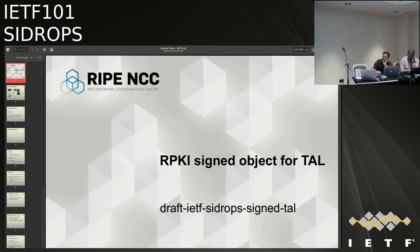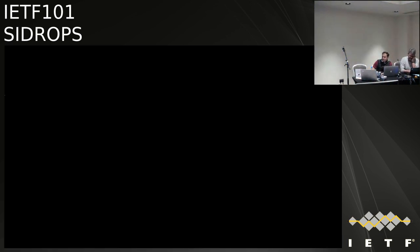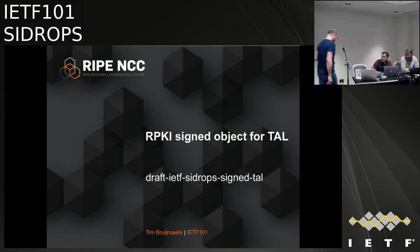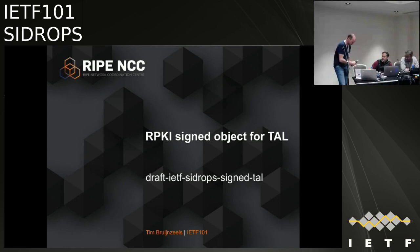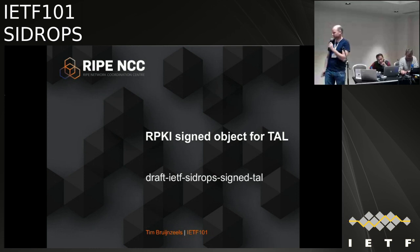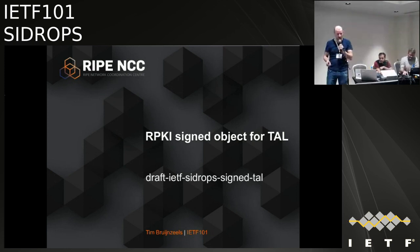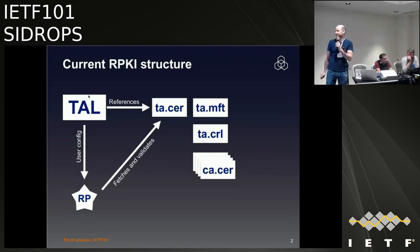There is a draft called 'An Object for Trust Anchor Locator.' Quick reminder of how this all works: we have the trust anchor locator file, which essentially contains a bunch of URIs, and a fingerprint of the key of the trust anchor certificate. This gets either shipped by default or configured by users in relying party software. It then fetches a certificate, validates it, confirms it matches the fingerprint, and from there can commence validation.